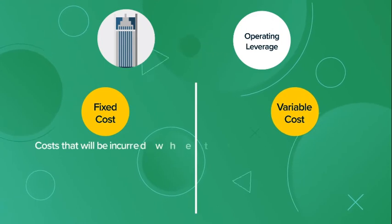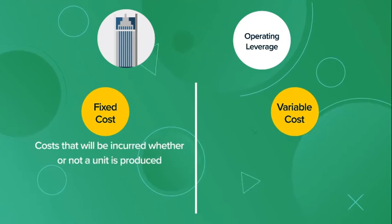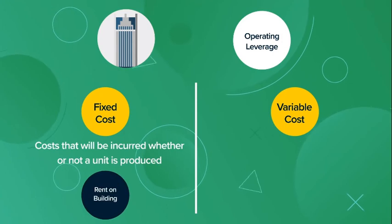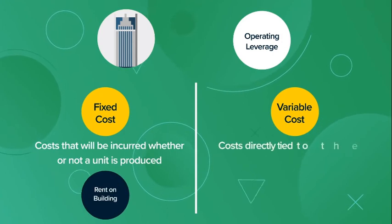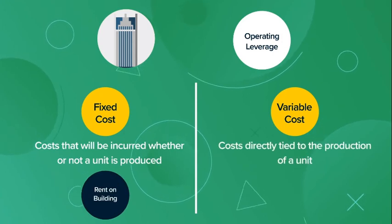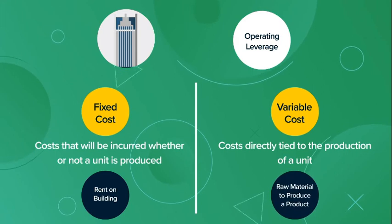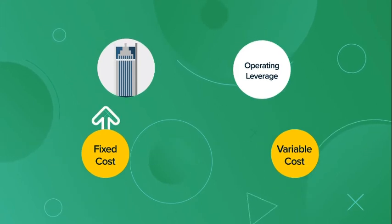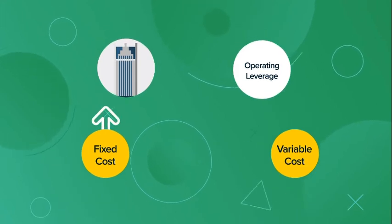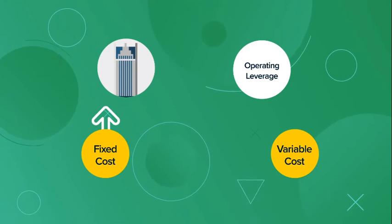Fixed costs are costs that will be incurred whether or not a unit is produced, such as rent on a building, and variable costs are costs directly tied to the production of a unit, such as the raw material to produce a product. The more fixed costs the company has relative to variable costs, the higher its operating leverage.